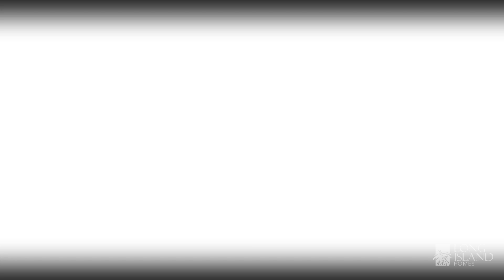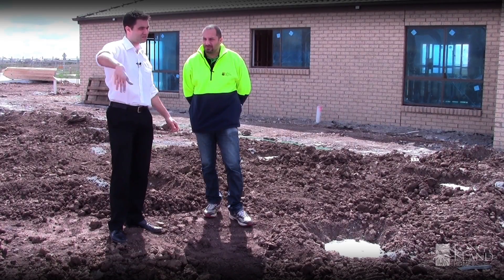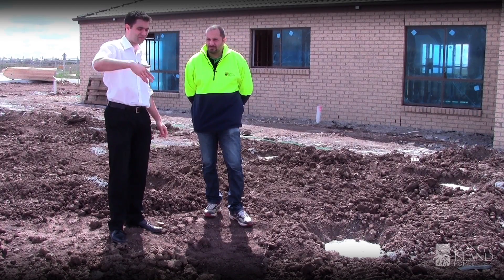Approximately 70 percent of all building sites in Australia is a class P, which are classified as problem sites. This is where the ability of the soil to evenly bear a load is very poor. Ground movement here as a result of moisture changes may be very severe, and these sites are typically subject to abnormal moisture conditions resulting from things like trees, dams, and poor site drainage. If you are building on a class P site you really should consult a structural engineer on the design.